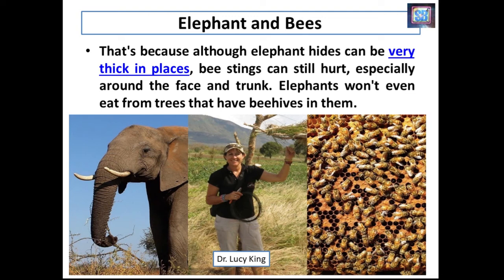The idea of using beehive fences originated from the well-established fact that elephants are scared of honeybees — even the sound of an angry swarm is enough to drive an elephant away. Elephants fear being stung on their sensitive parts, such as their eyes, face, and trunk. They are especially scared of the Asian honeybee, Apis cerana indica. This idea came from the work of Dr. Lucy King, a zoologist.